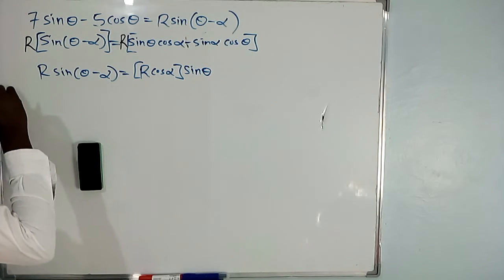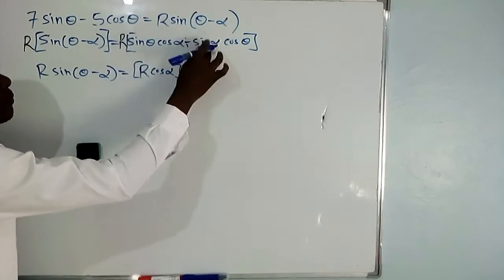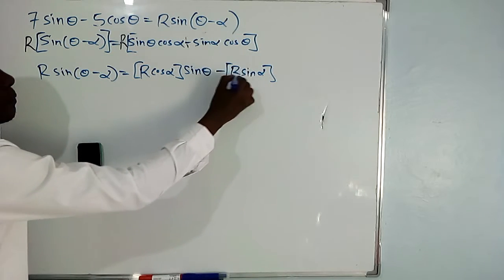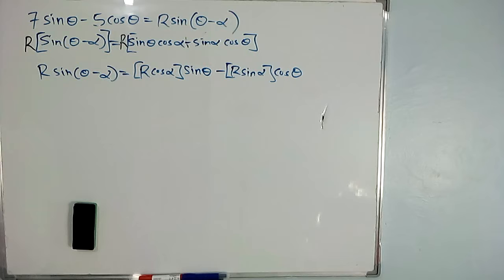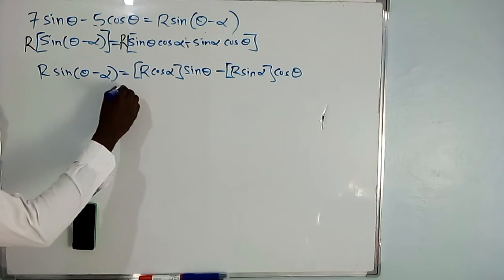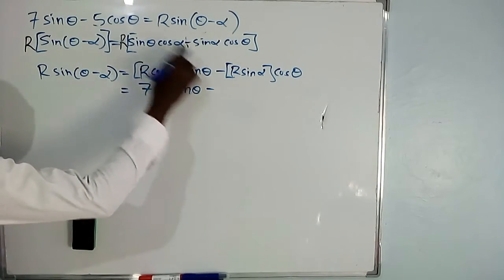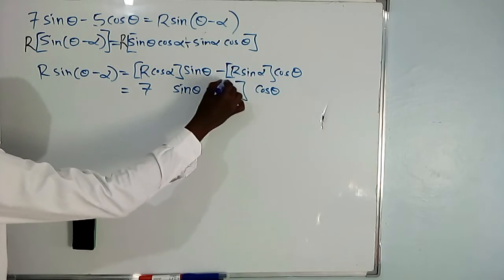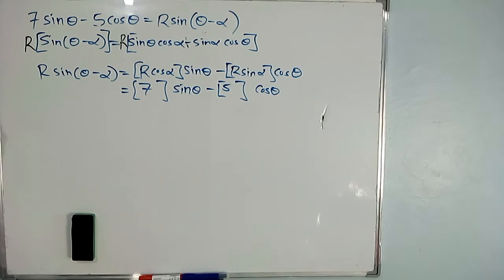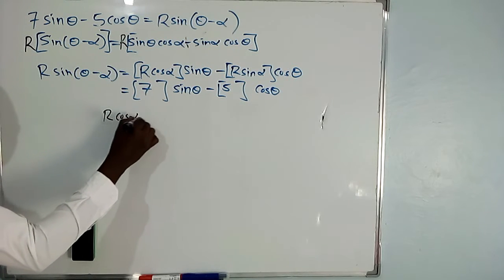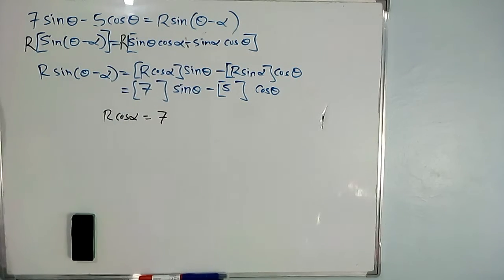So we have R cos alpha sin theta minus R sin alpha cos theta. The coefficient of sin theta is R cos alpha, and the coefficient of cos theta is R sin alpha, with a negative sign between them — matching our original equation 7 sin theta minus 5 cos theta. Comparing coefficients: R cos alpha must equal 7, and R sin alpha must equal 5.